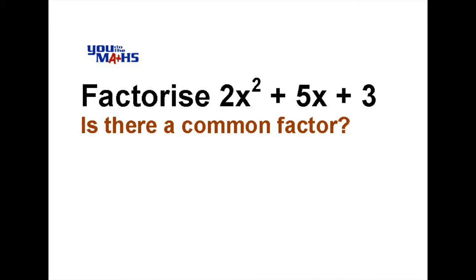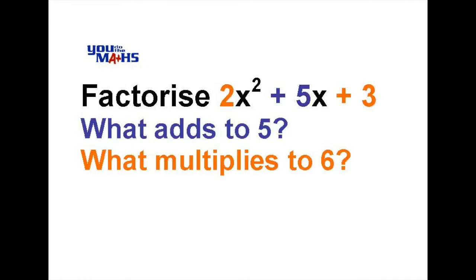First we ask what adds to the middle term, in this case the coefficient is 5. We also ask what multiplies to 6, and that 6 comes from the product of the coefficient of x squared and the constant at the end.